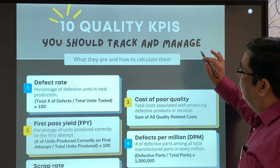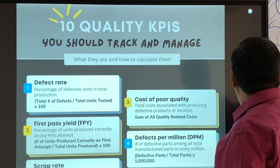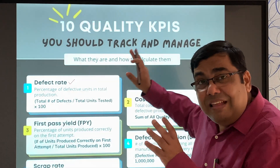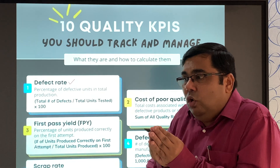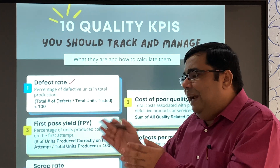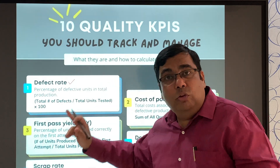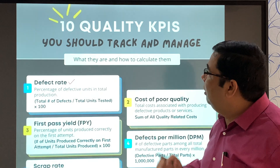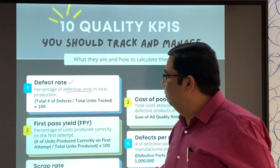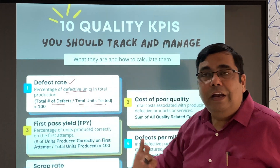There are 10 KPIs in total and we will discuss each one. The first is defect rate. Some of these KPIs are collected from the quality metrics given by the USFDA — so some KPIs are directly or indirectly linked to the quality metrics shared by the USFDA. Defect rate means percentage of defective units in total production: number of defects divided by total units tested, multiplied by 100.